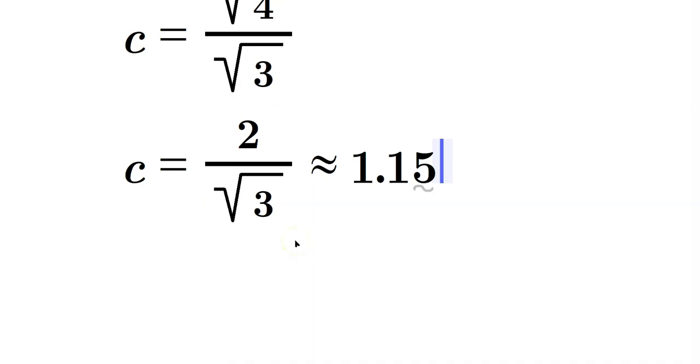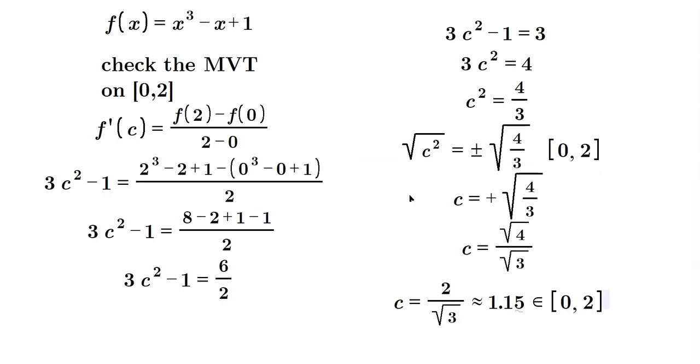And when you approximate this, you get a value of about 1.15. And notice that this number is an element of that interval that goes from 0 to 2. Remember, this little e-looking symbol really stands for element, right? So 1.15 belongs to the interval from 0 to 2. In other words, the 2 over the root of 3 is our value of c that makes the mean value theorem true. And here is all of the work. Please see if I like.